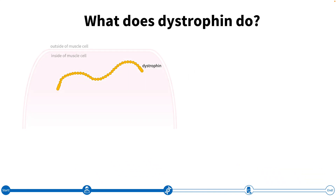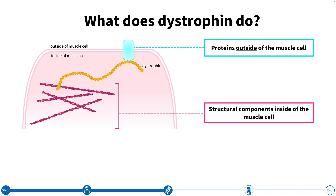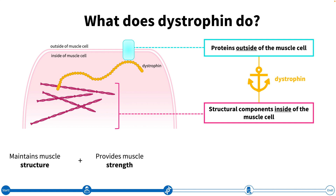Dystrophin is highly expressed in muscle cells, meaning that healthy muscles contain lots of dystrophin. It is responsible for connecting proteins outside of the cell to internal components of the muscle cell. You can think of it as an anchor holding external and internal structures together. In this way, dystrophin is very important in maintaining the structure of the muscle, providing strength and protection from injury, and making sure the muscle is healthy and functions properly.